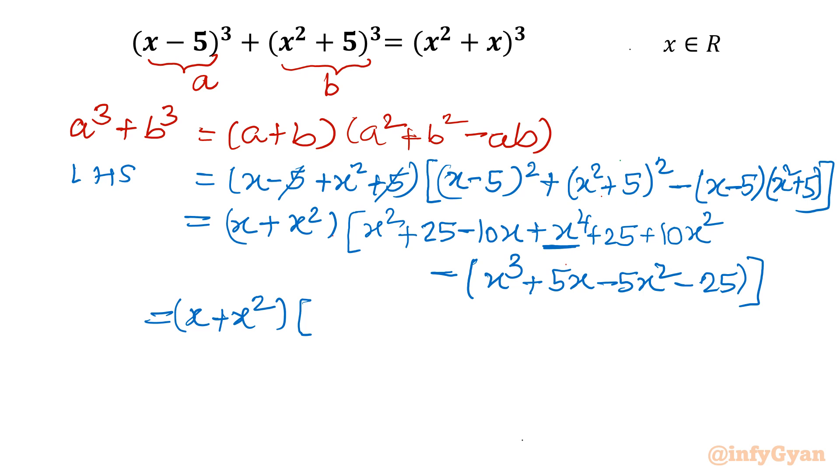x times x² is x³. x times 5 is 5x. -5 times x² is -5x². -5 times +5 is -25. Bracket is closed. Now you will consider the first bracket unchanged. Now come to this bracket. If you will see x⁴ is there, so I can write x⁴. Let me write here x⁴.